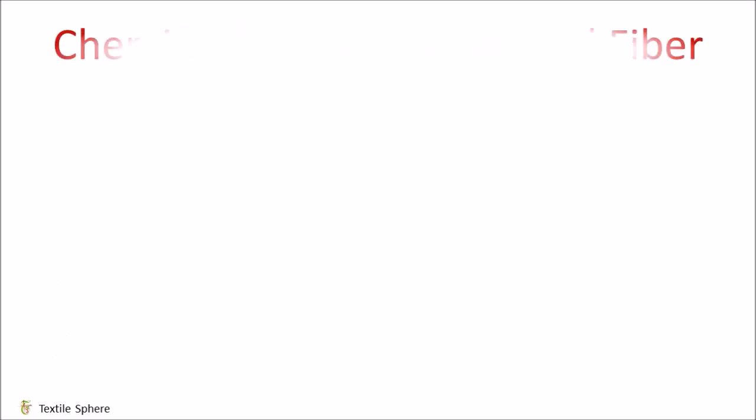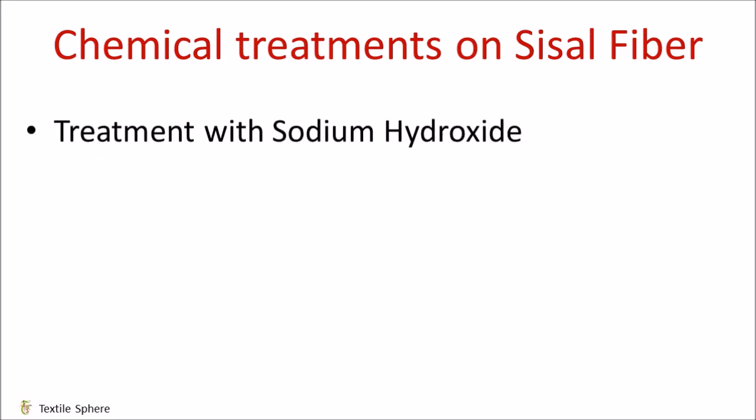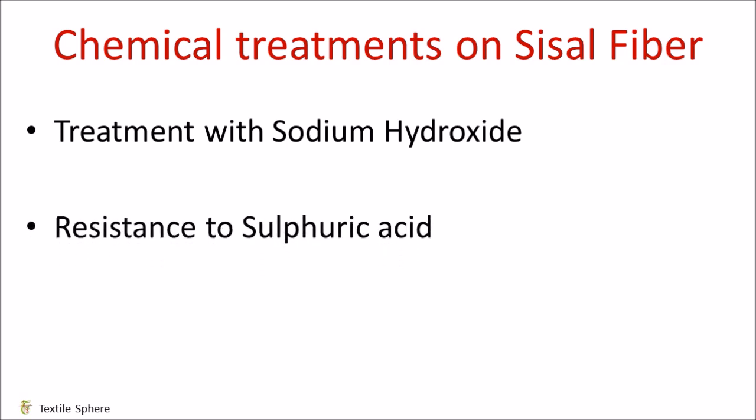Now let's talk about chemical treatments on sisal fiber. The first one is treatment with sodium hydroxide. Sodium hydroxide does not affect it but dissolves and removes some of the non-cellulosic materials such as hemicellulose, pectin and water-soluble substances. The next is resistance to sulfuric acid — if sisal fibers are immersed in sulfuric acid, it will decompose. And the last is resistance to water — it shows good water resistance. Resistance of sisal fiber to sea water is higher than that of fresh water.